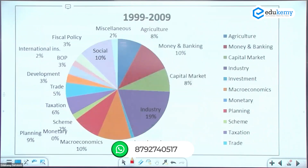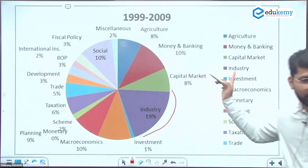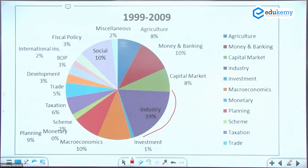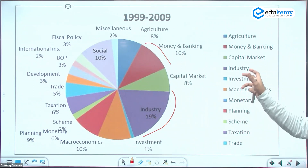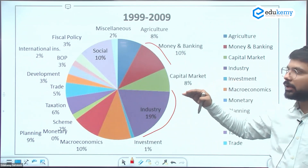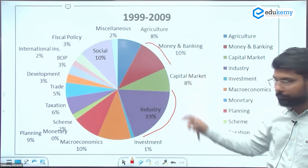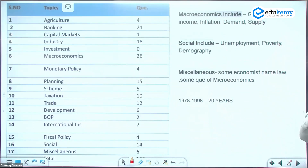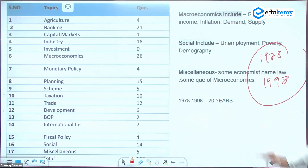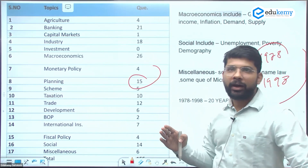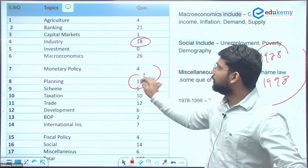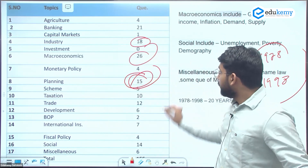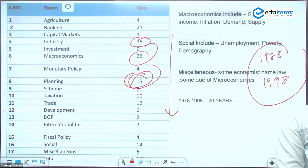Post-2010, the contribution of macroeconomics, fiscal policy, and monetary policy has increased significantly. Money and banking maintains consistent question numbers even as total questions grew, keeping its weightage at 10-12%. Before 2010 — from 1978 to 1998 — the major focus was on planning: Five-Year Plans like the 7th, 8th, and 9th, along with industry and macroeconomics.